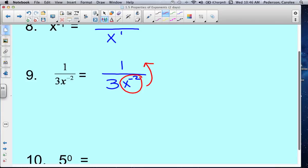Where students make mistakes is if they want to bring that 3 up with it, it is not true. So it's 1 times x squared, and then the 3 stays underneath. So it is x squared over 3.